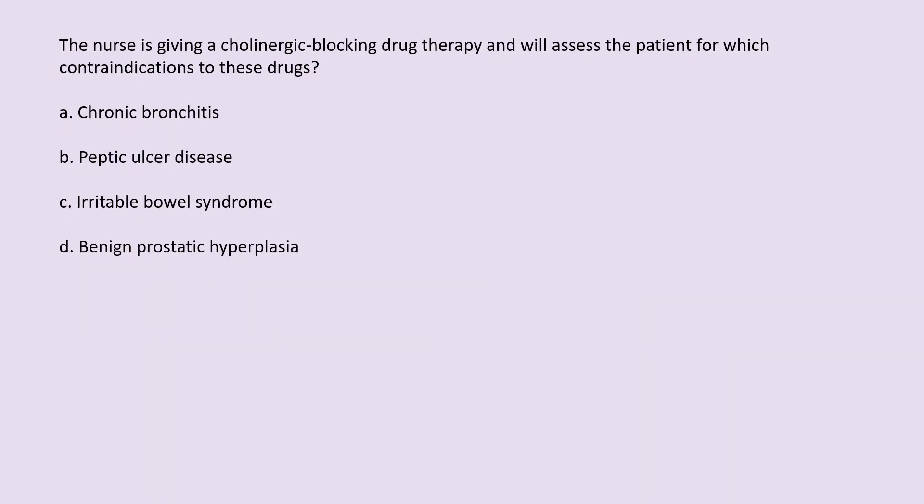The nurse is giving a cholinergic blocking drug therapy and will assess the patient for which contraindications to these drugs? A. Chronic bronchitis. B. Peptic ulcer disease. C. Irritable bowel syndrome. D. Benign prostatic hyperplasia.